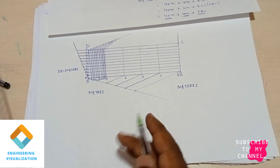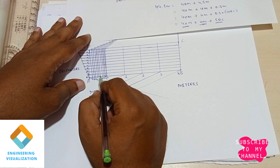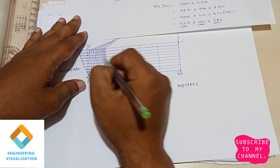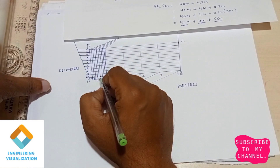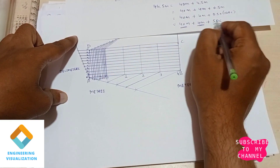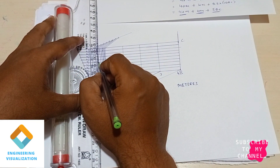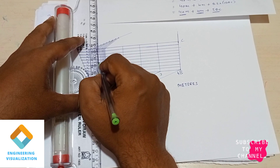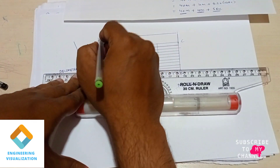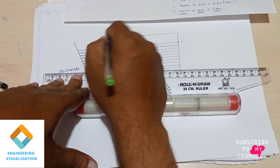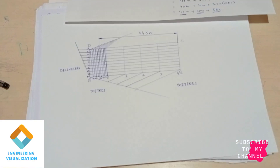Now we can see 4 meters and 5 decimeters. We take the intersection point of 4 and 5 decimeters, draw one vertical line from that intersection point, and show the dimension. The dimension shown is 44.5 meters. Thank you for watching the video.